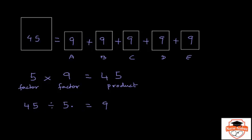So you divide the product — 45 in this case — by the given factor 5, to find out the other factor. We say 45 divided by 5 is 9. And in this division sentence, 45, the number you are dividing, is called the dividend. The number you are dividing by — one of the factors in the multiplication sentence — is called the divisor. And the answer to the division, the unknown factor from multiplication, is called the quotient.